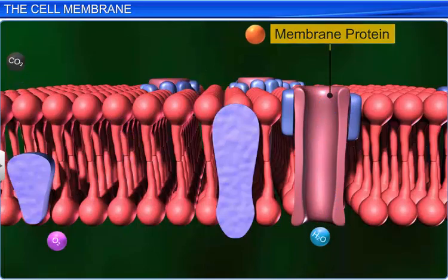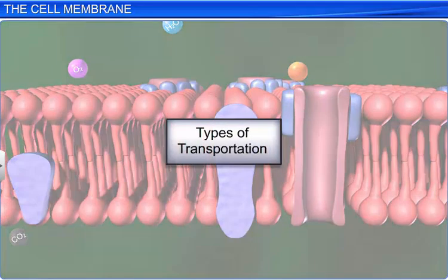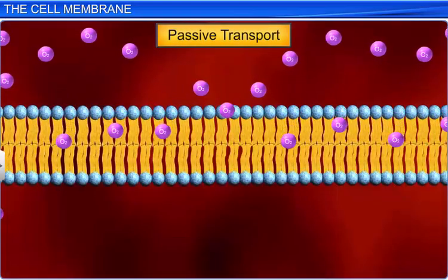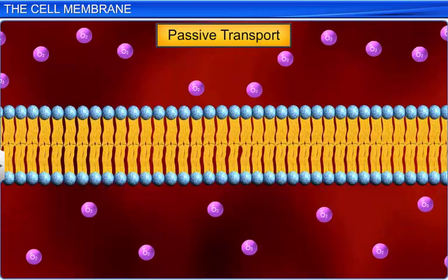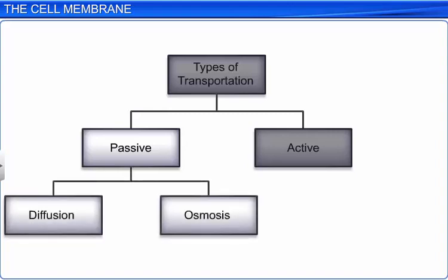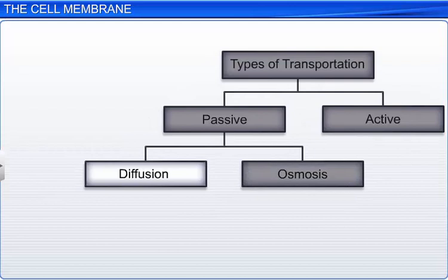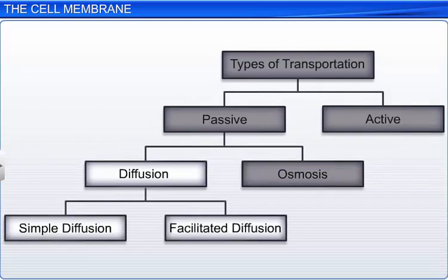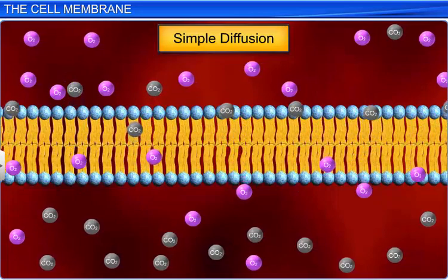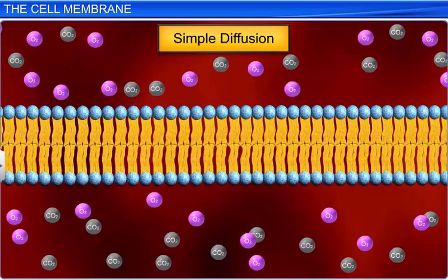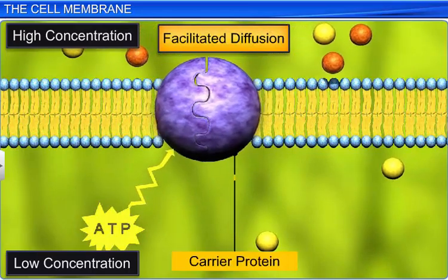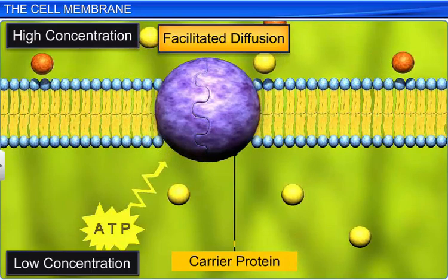The transport of these ions and molecules takes place either through passive transport or through active transport. In passive transport, substances require no metabolic energy to move across the membrane. Passive transport occurs either through diffusion or osmosis. In a cell membrane, we observe simple diffusion and facilitated diffusion. In simple diffusion, oxygen and carbon dioxide molecules freely move across the membrane from higher to lower concentration, whereas larger molecules such as glucose are transported by facilitated diffusion, in which carrier proteins in the membrane change their shape and accelerate the diffusion process.